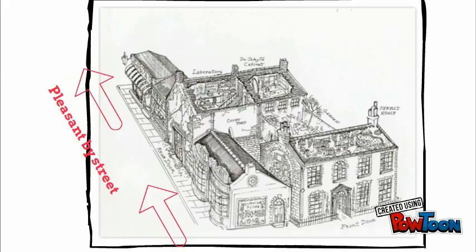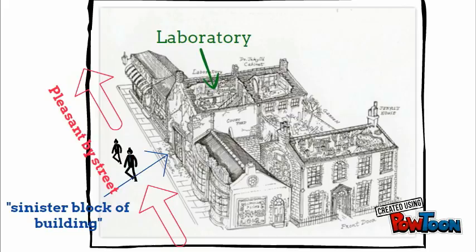Students are frequently confused by the layout of Jekyll's house, and it's not surprising. In Chapter 1 we have Enfield and Utterson walking down a pleasant by-street where they discuss a door that's actually the rear door to Jekyll's laboratory.